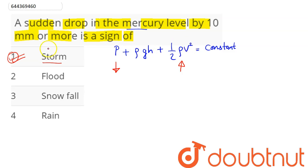Option number 1 is the correct answer, that is storm. A sudden drop in the mercury level by 10 mm or more decreases the pressure, due to which velocity increases. Hence this denotes that air is moving with higher velocity.